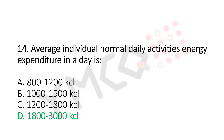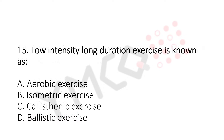Let's move to question number 15. Low intensity, long duration exercise is known as: Option A, aerobic exercises. Option B, isometric exercises. Option C, calisthenic exercises. Option D, ballistic exercises. And the answer is Option A, aerobic exercises.